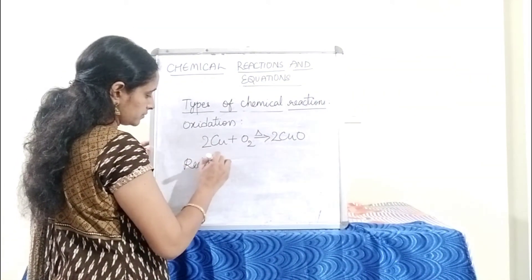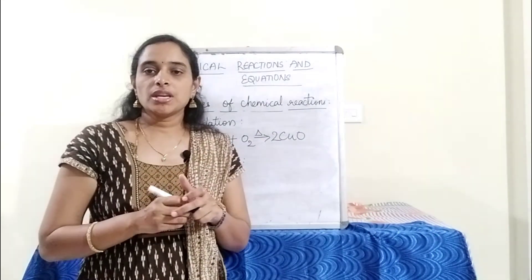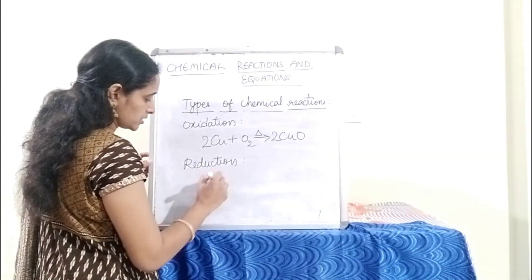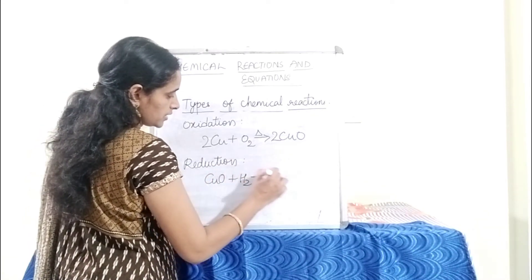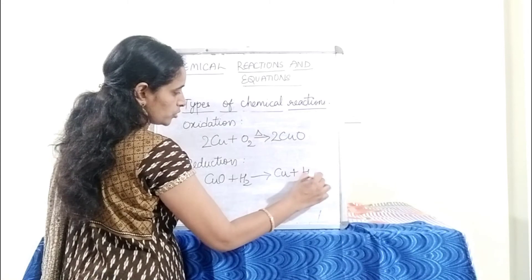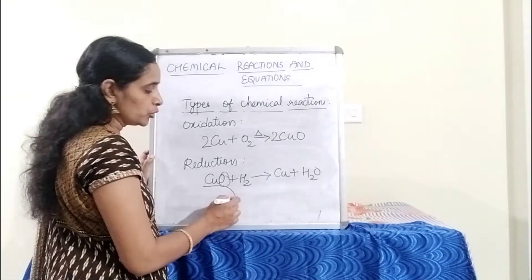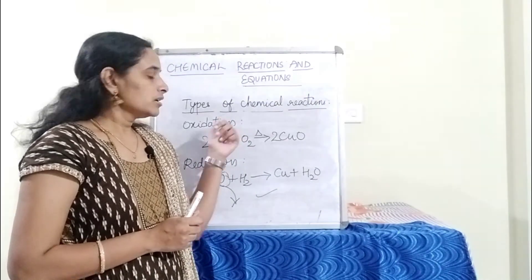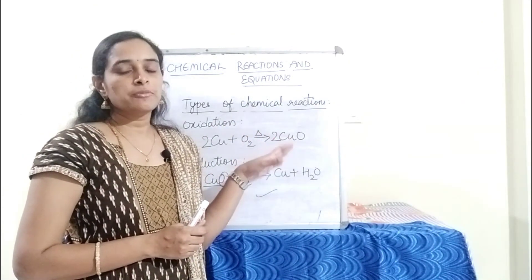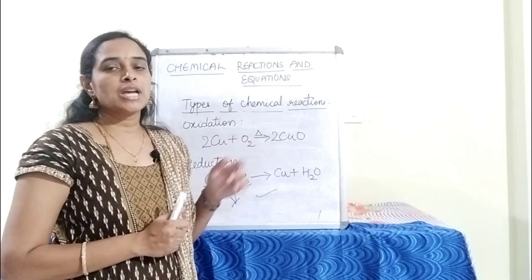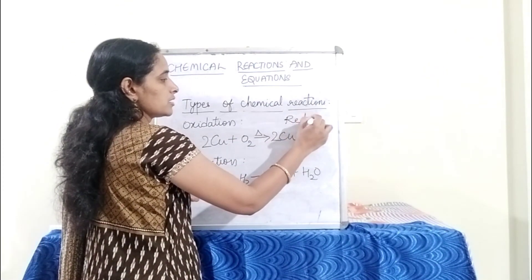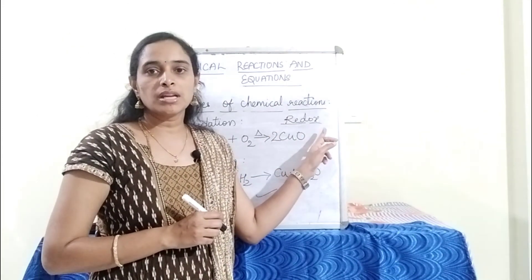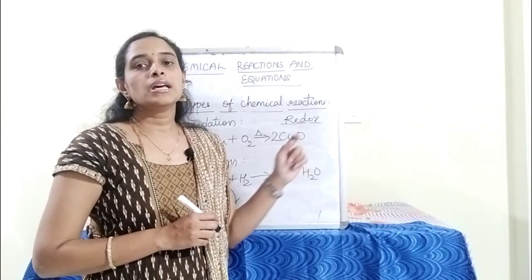Reduction is the reaction in which removal of oxygen takes place. An example is CuO + H2 → Cu + H2O — oxygen is removed from the metal oxide. When both oxidation and reduction occur in a single chemical reaction — oxygen is added to one substance and removed from another — such reactions are called redox reactions, where redox stands for reduction and oxidation happening together.